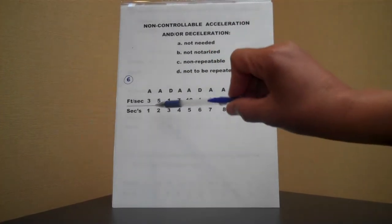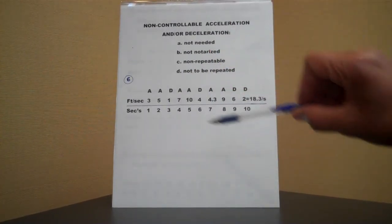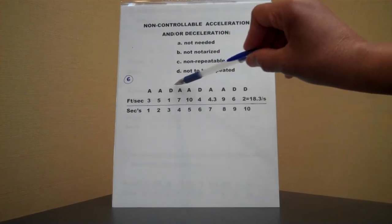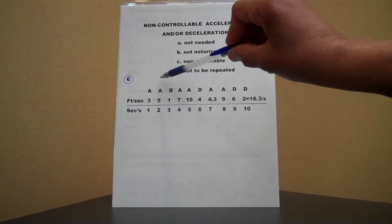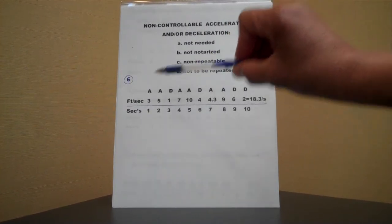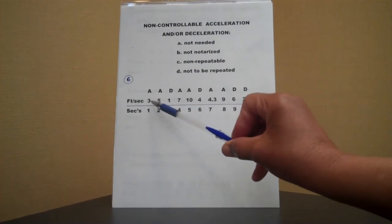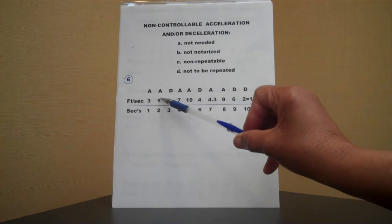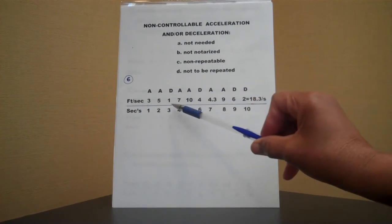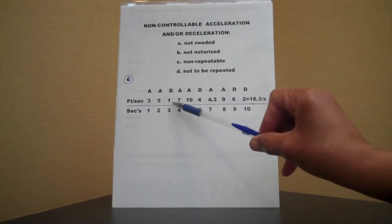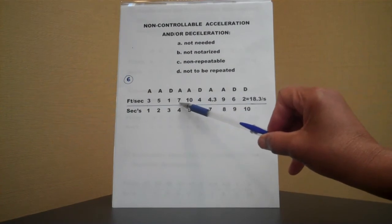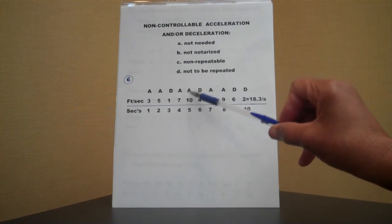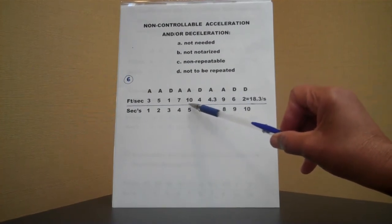Such as feet per second. Once again, you have ten seconds, you have acceleration, acceleration, deceleration. A means acceleration, D means deceleration, and these here, you've accelerated three feet, you accelerated it five more feet, you decelerated it one foot, accelerated it seven more feet on top of that, accelerated ten more feet on top of that.